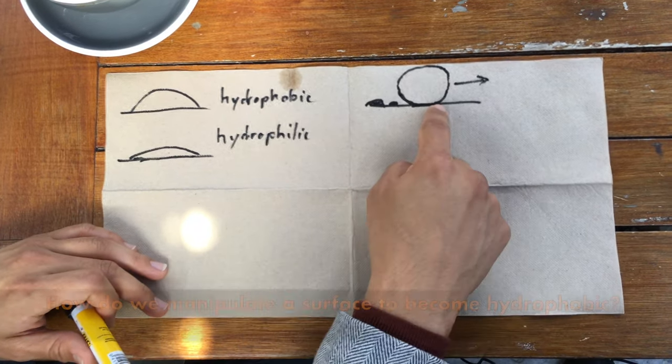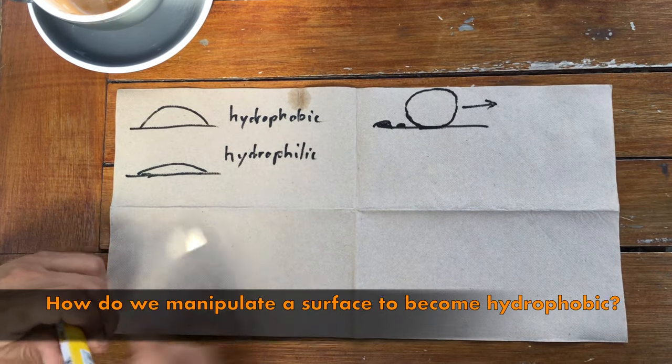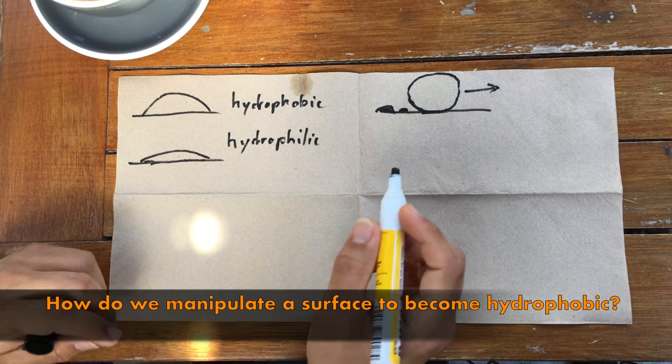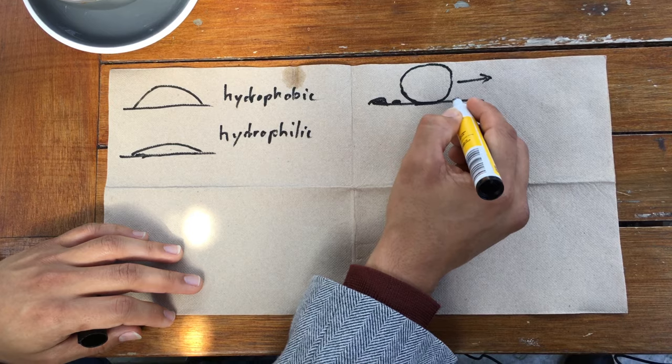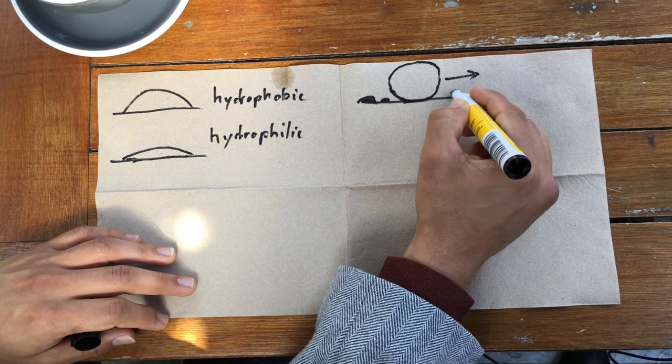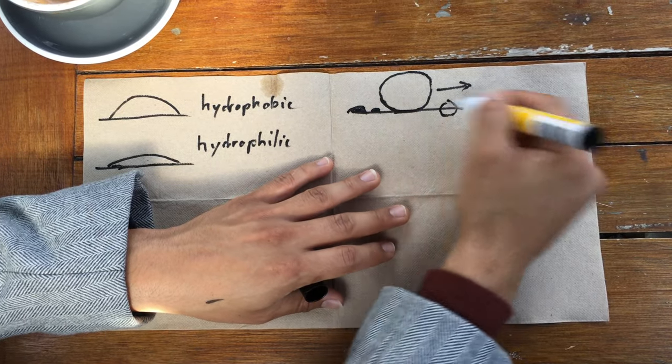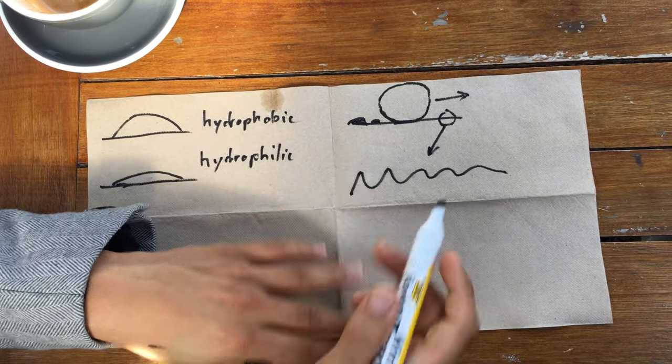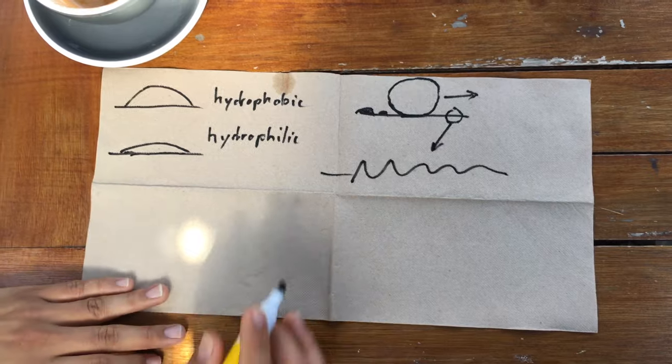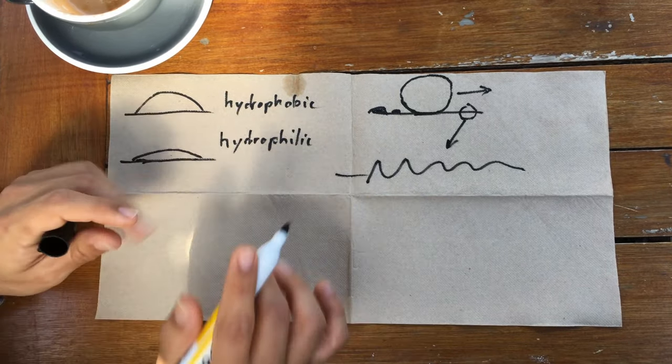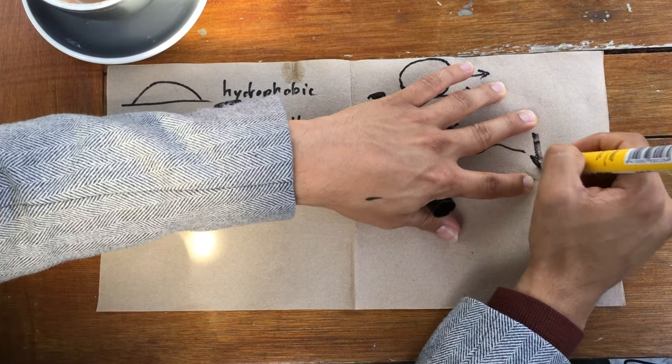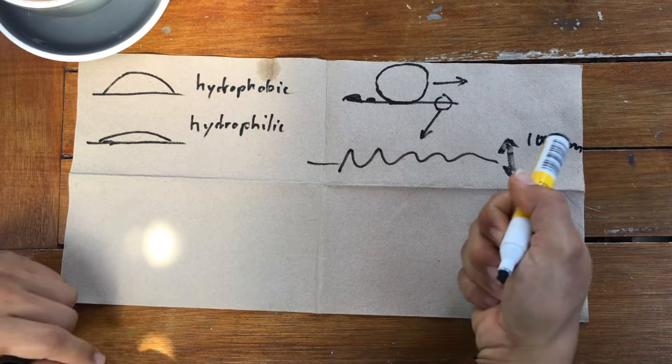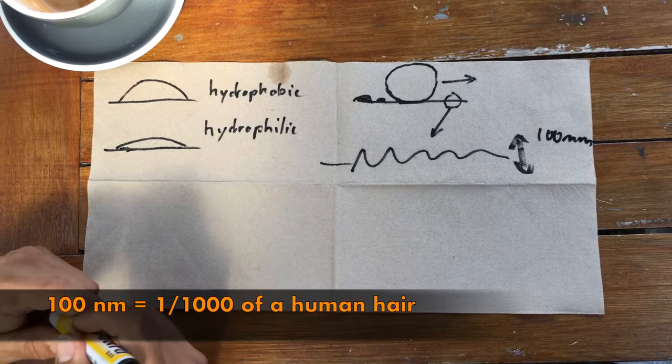So how can we make a surface go from hydrophilic to something that is quite hydrophobic? Well, what we do is actually we look at the surface, but we try to modify it very closely. So if I do a big zoom into this surface here, that's going to be looking something like that. On the surface, there is very little material that is naturally completely smooth if you look close enough. And when I say close enough, if I was to put a scale bar here, that would be what we say 100 nanometers, and that's basically a thousandth of the diameter of a human hair, so quite small.